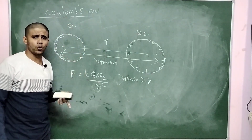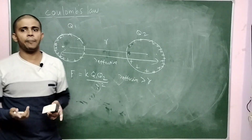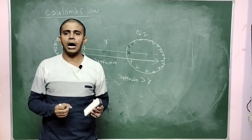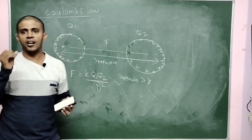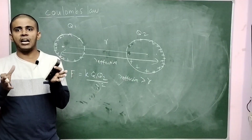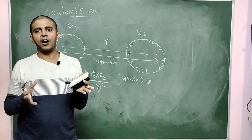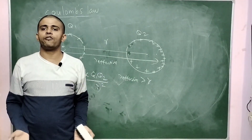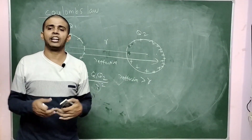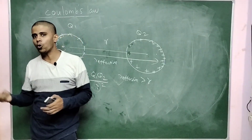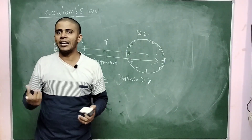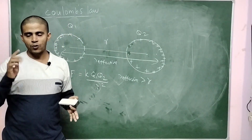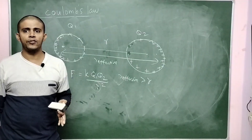Another limitation of Coulomb's law: it is applicable only to charges that are at rest. When charges start to move, magnetic forces also come into play in addition to electric forces. Coulomb's law cannot predict those magnetic forces, and this is one serious drawback of the law.